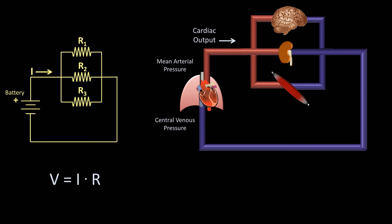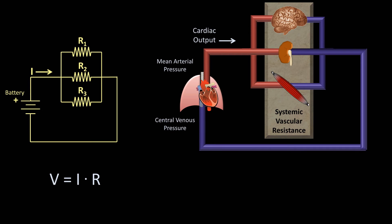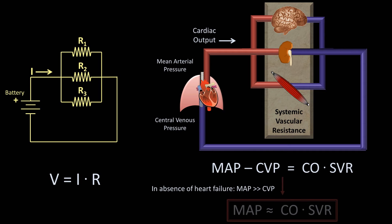However, we don't usually need to worry about the individual resistors, but rather we worry about the combined total resistance of all of them, which is called the systemic vascular resistance. So this gives us mean arterial pressure minus CVP equals cardiac output times systemic vascular resistance. In the absence of heart failure, MAP is usually much larger than CVP, so this simplifies to MAP is approximately equal to cardiac output times SVR, and this equation is undoubtedly one of the most important in all of medicine.